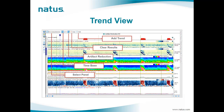The trends view shows the trends calculated offline or in real time during recording. Users can use the default template named panel in Persyst, which shows the most common and used trends in ICU. They also have the opportunity to create different templates and click on the Select Panel button to choose the desired template. Additionally, by using the same template, users can add one or more trends to the existing panel by clicking Add Trend and selecting the desired trend.